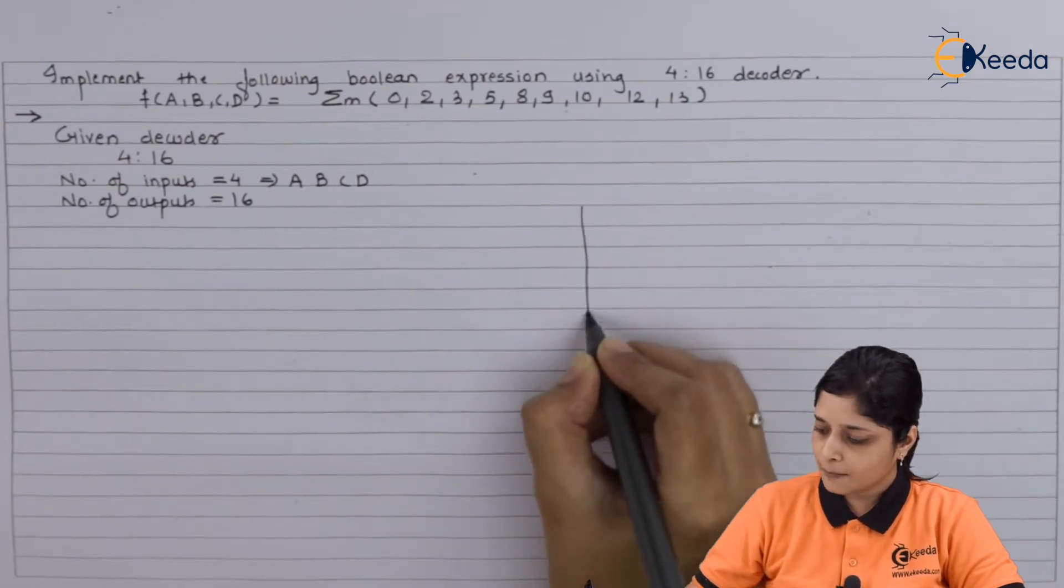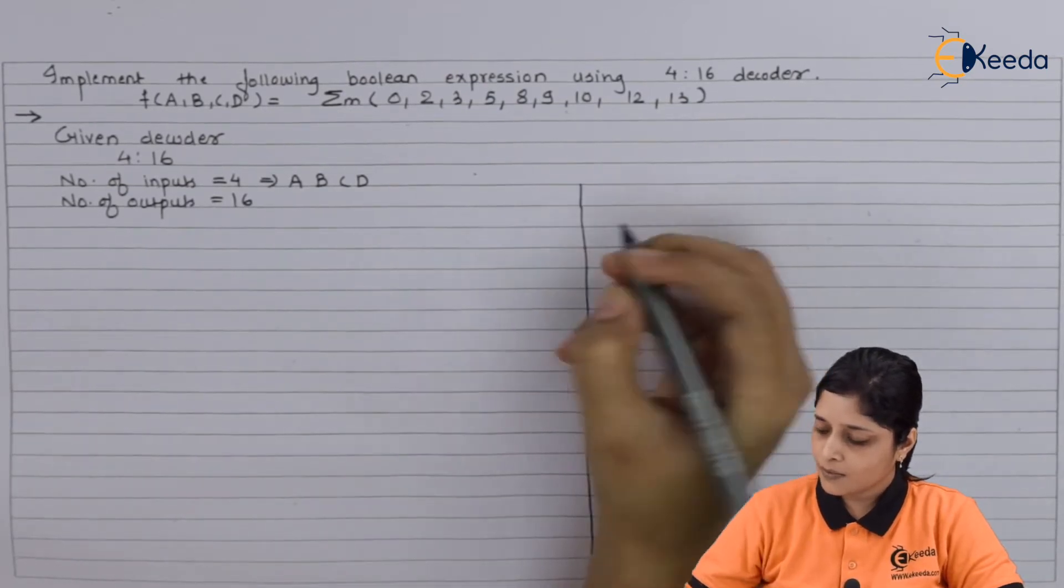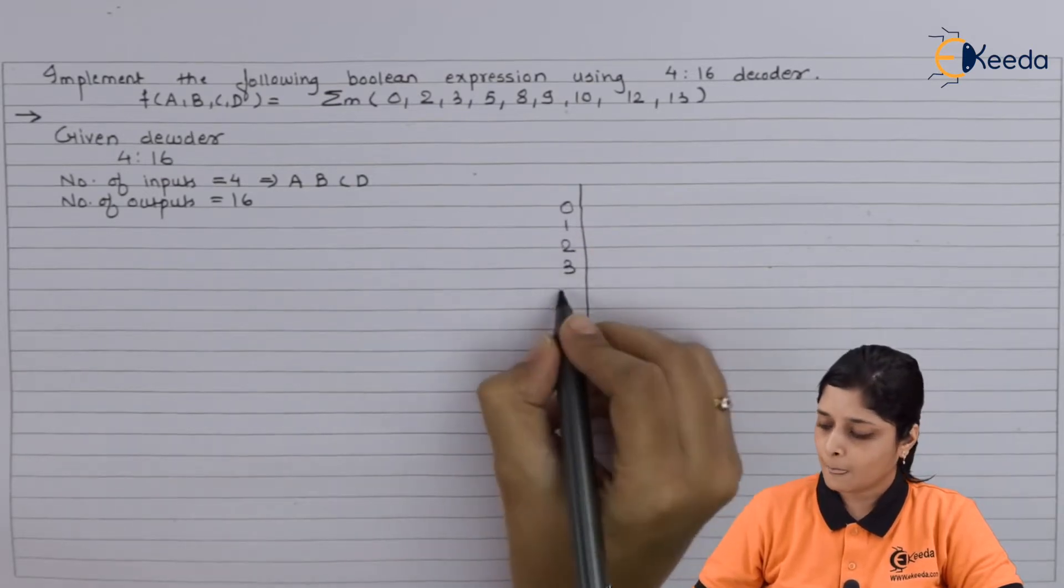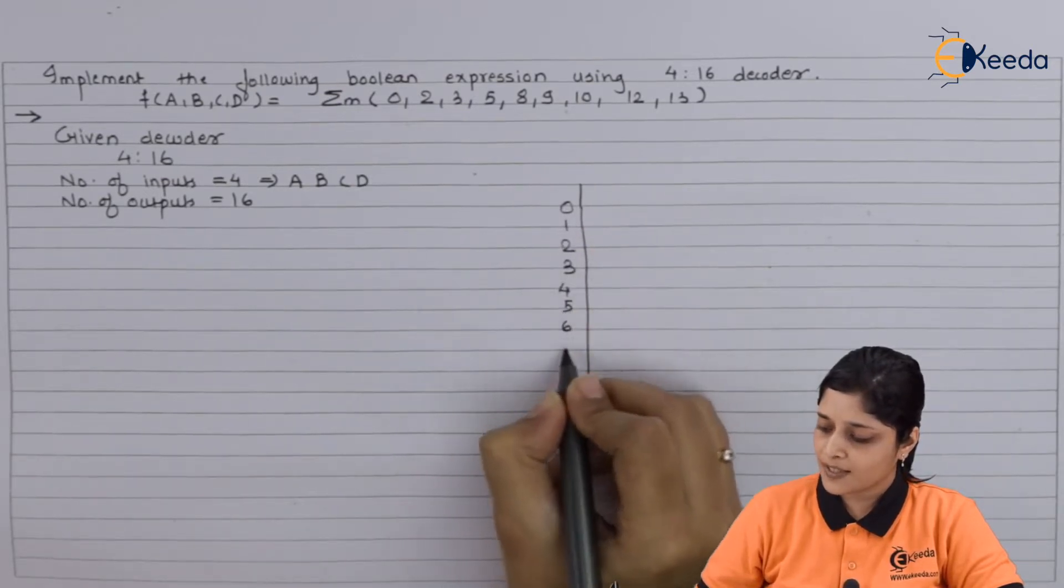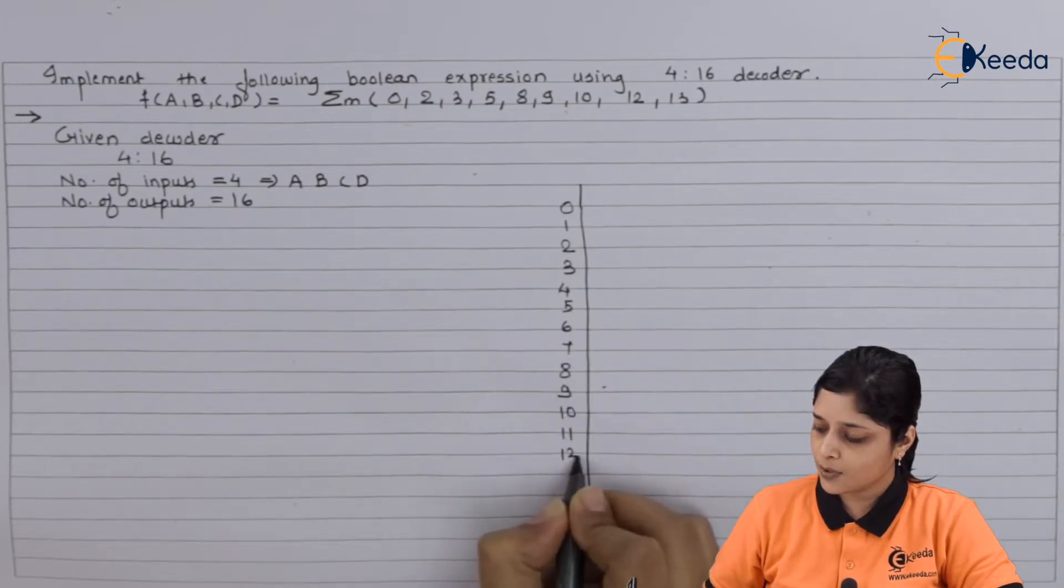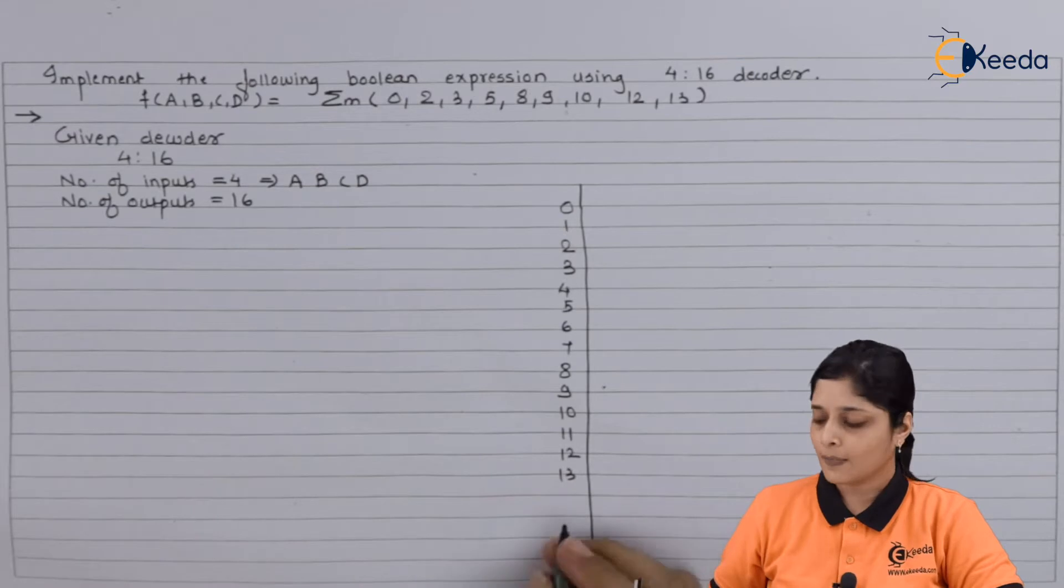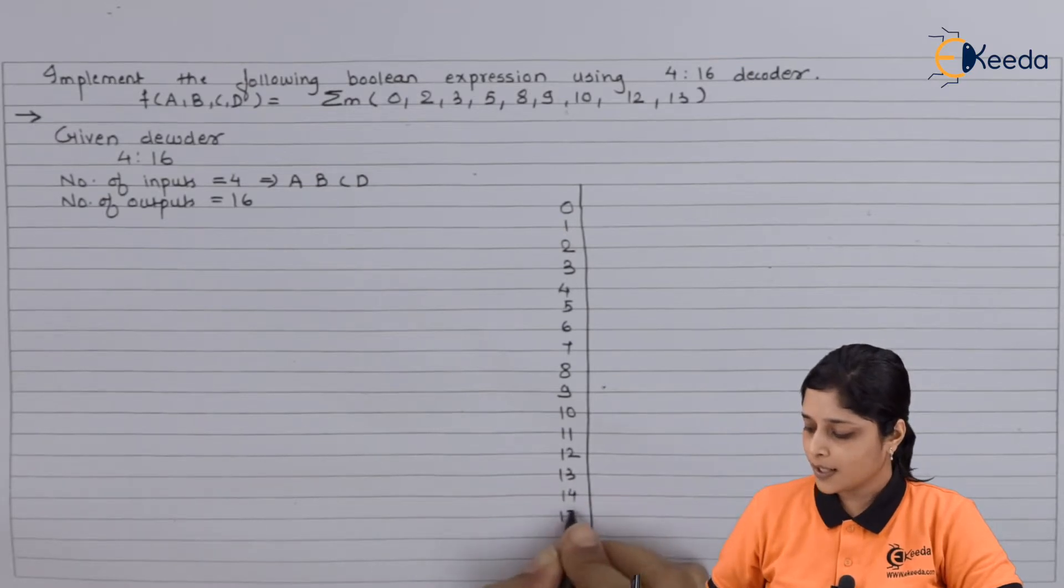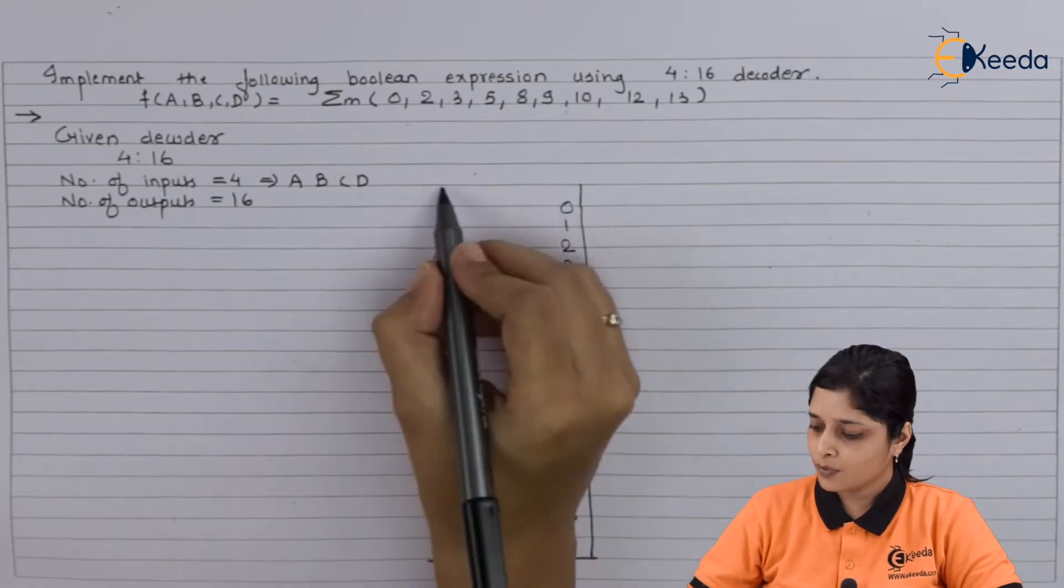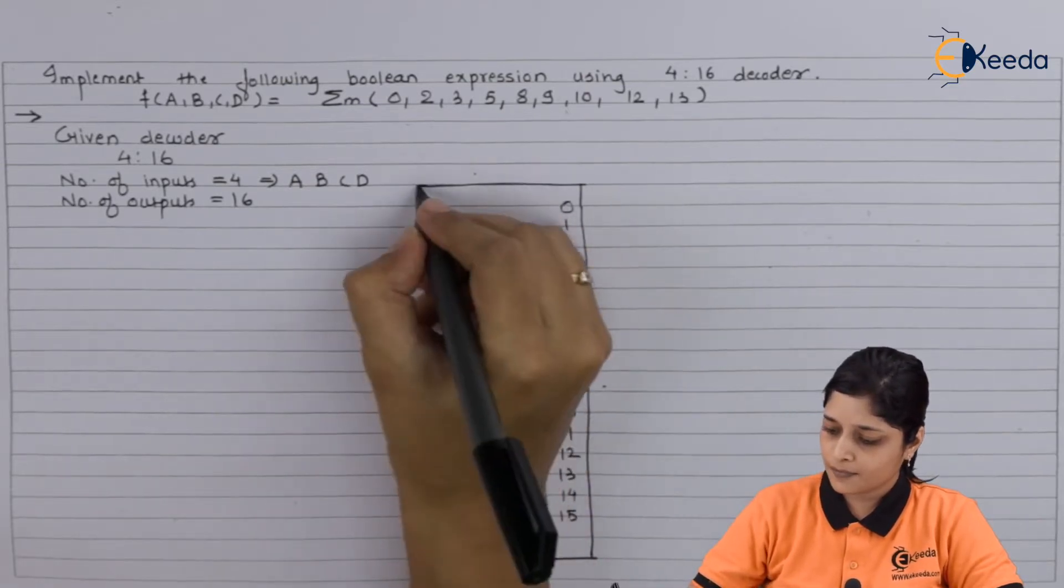We will start with 0, 1, 2, 3, 4, 5, 6, 7, 8, 9, 10, 11, 12, 13, then we have 14 and 15. So up to 15 you have to draw the diagram here because it is a 4 to 16 decoder.